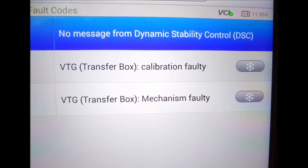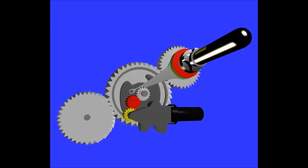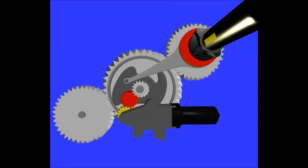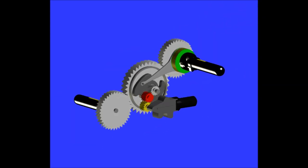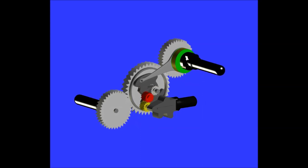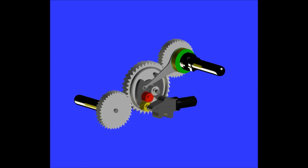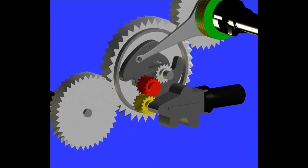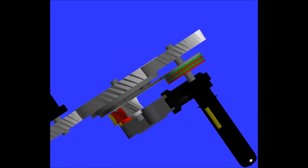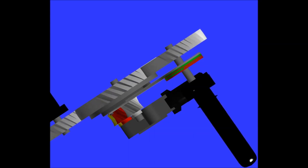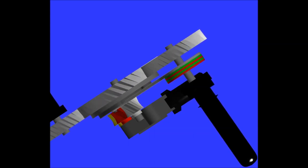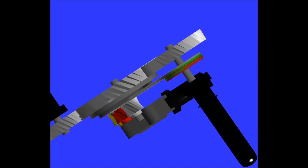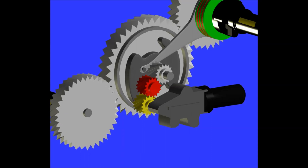Before we continue on to the rest of the diagnostics, on screen you can see an animation we did for the — they also call it the direct drive unit — but this is really part of the transfer case. This is what engages the clutches, the clutch pack on the transfer case. On the right-hand side in green are the clutches, and you can see that as the motor is actuated it actually engages or disengages the clutches. This happens very, very fast — sometimes within a couple of fractions of a second.